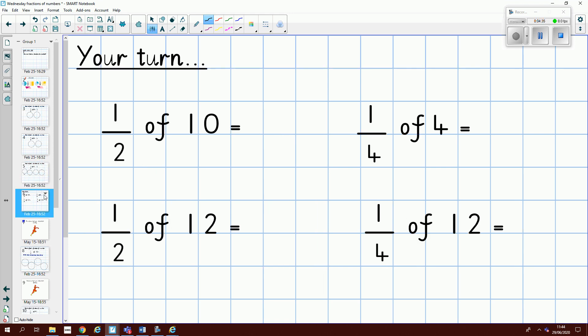Now, over to you. It is your turn. Can you find these fractions of amounts? I'm going to give you some time now to write them down. So if you've got a pen and some paper, you need to write down one half of ten, one half of twelve, one quarter of four, and one quarter of twelve. You write those down.